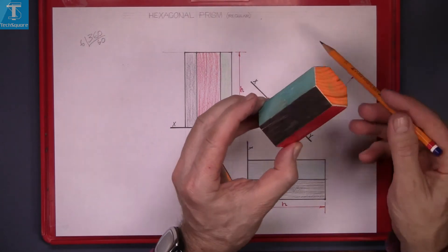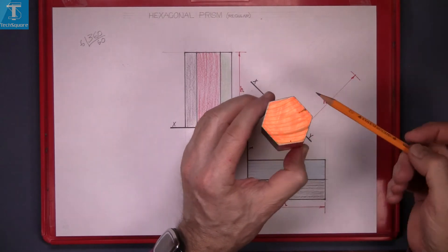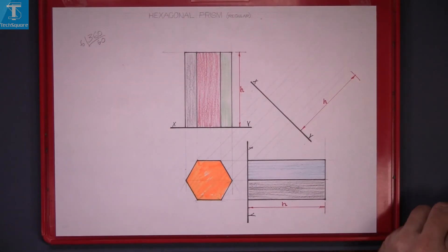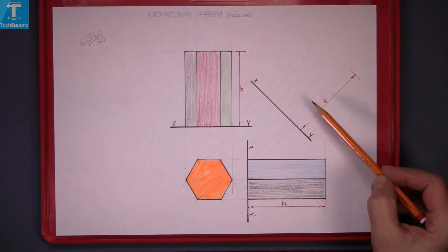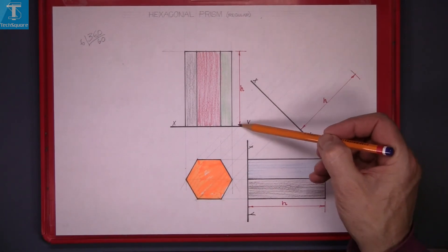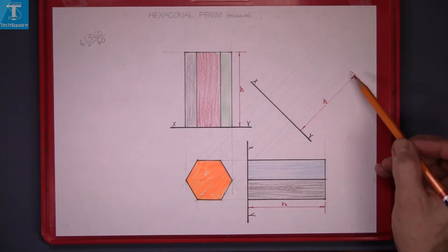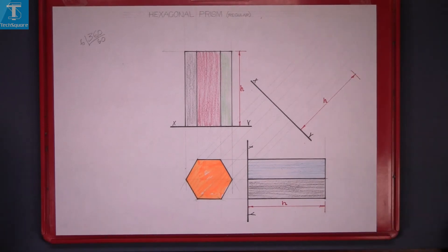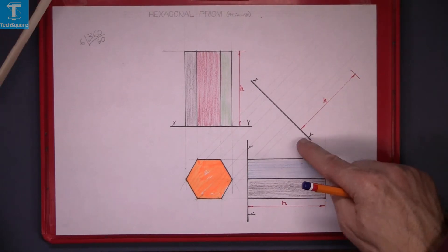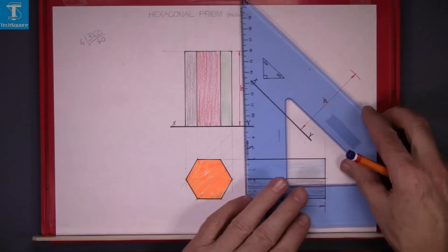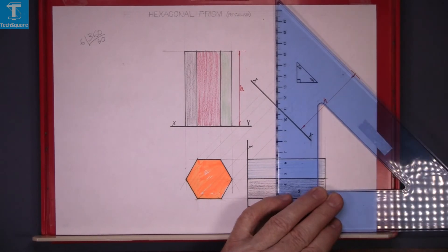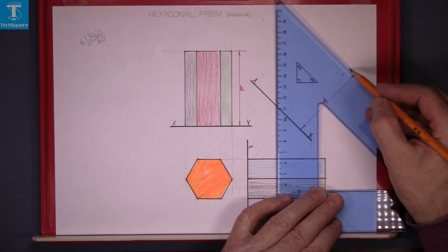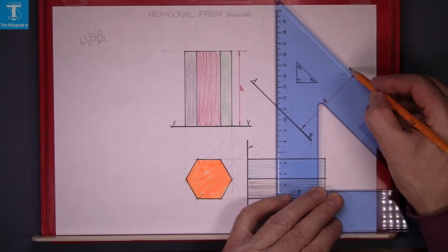These two lines at the back won't be visible. So we project the lines up; the height we take as before, marked up here, and draw your line across parallel with the XY line. And that there is the top of the prism.